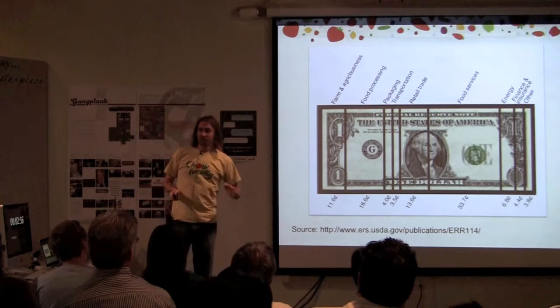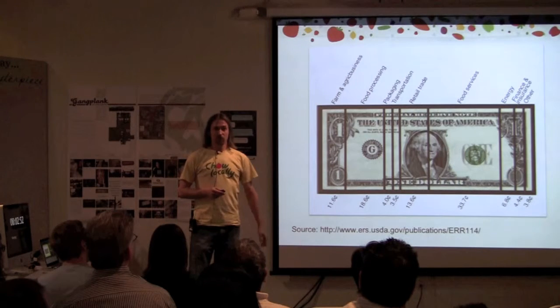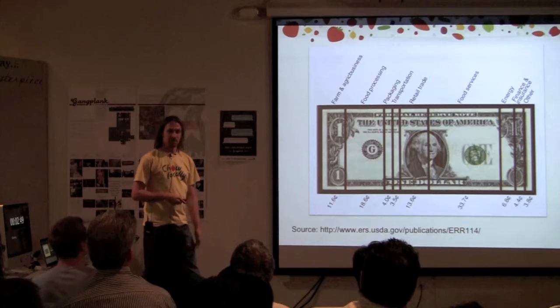But the local food movement is also about removing the middlemen between the farmer and actually your table. Today, the farmer gets less than 12 cents on the dollar for everything that they produce.